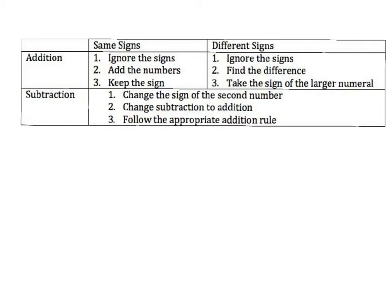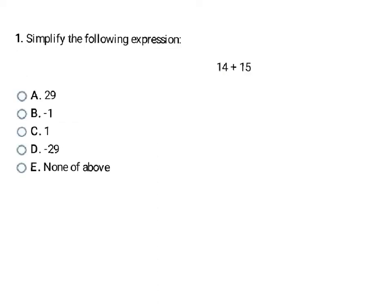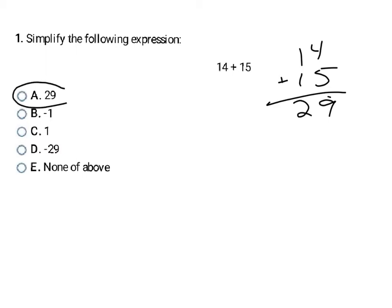Let's look at some examples using these rules. In this first example, I have positive 14 and positive 15 — same signs, and I'm adding. So same signs means I add these numbers: 14 plus 15 is 29. They have the same sign, so my answer is going to have the same sign also — it's positive. So positive 29 is my final answer. That one should be fairly easy because it looks like what you started doing in first and second grade.